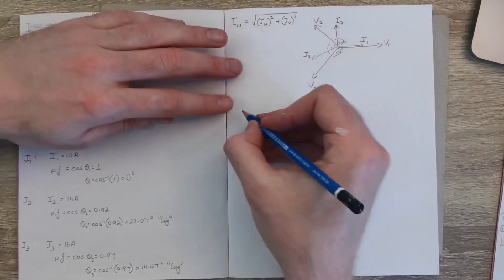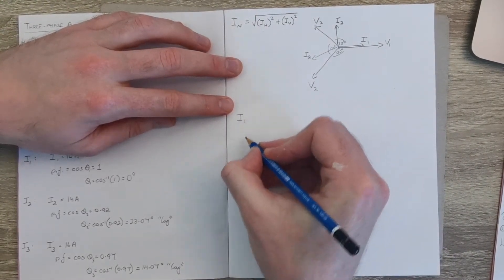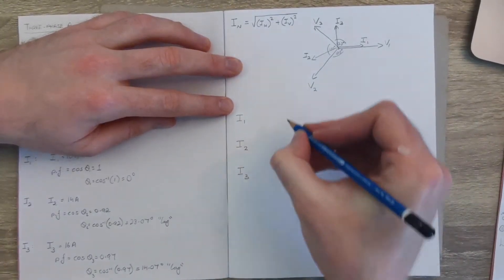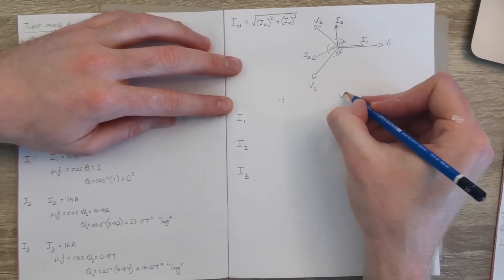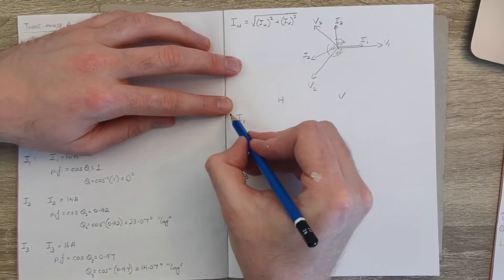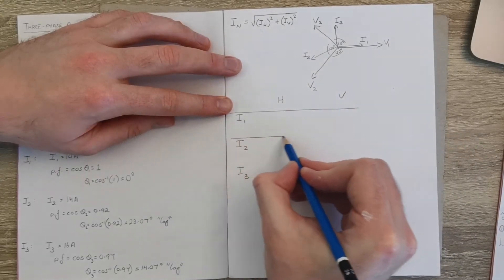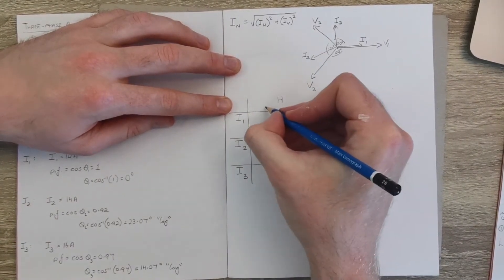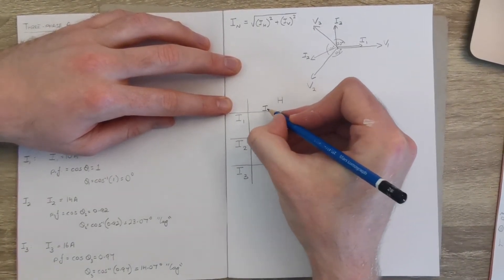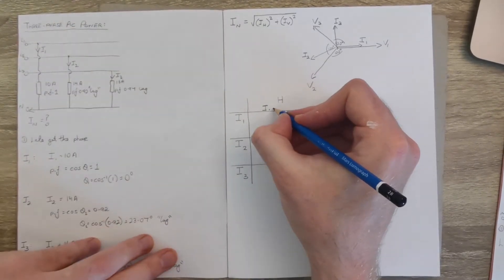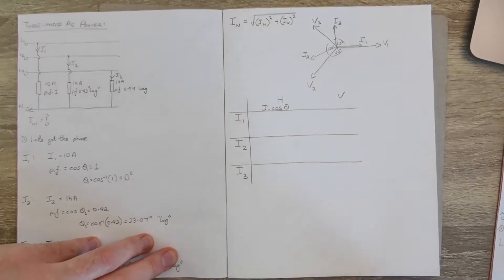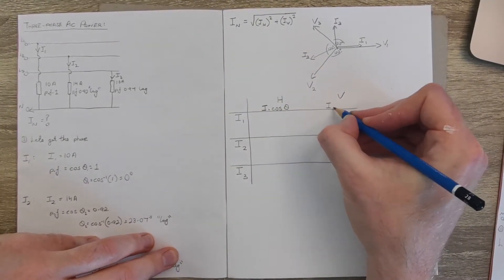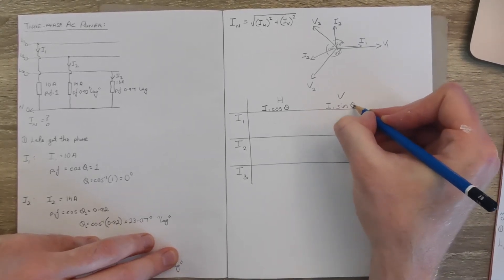And I think it always helps to do a table for these, so i1, i2, and i3, and we'll get the horizontal and vertical components here. Now remember, to get the horizontal components it's whatever the size of the current is times the cosine of its angle, and the vertical part is the size of the current times the sine of the angle.